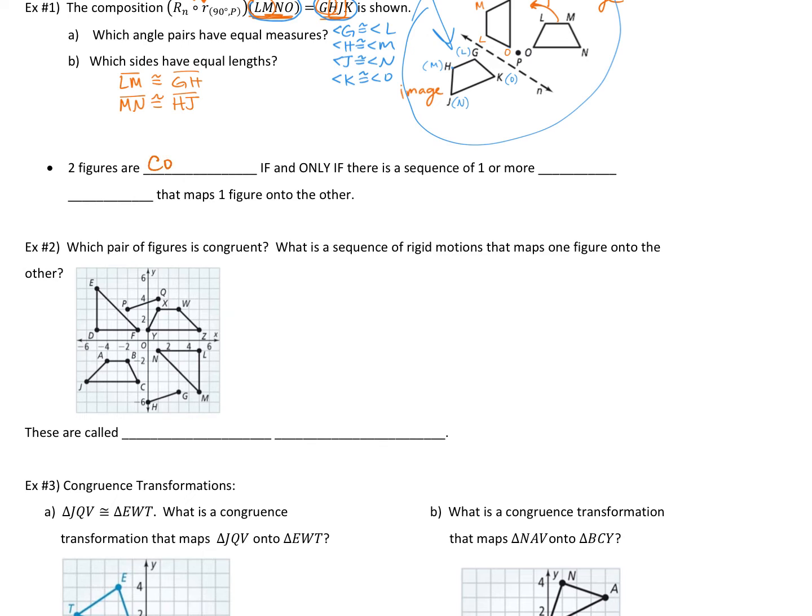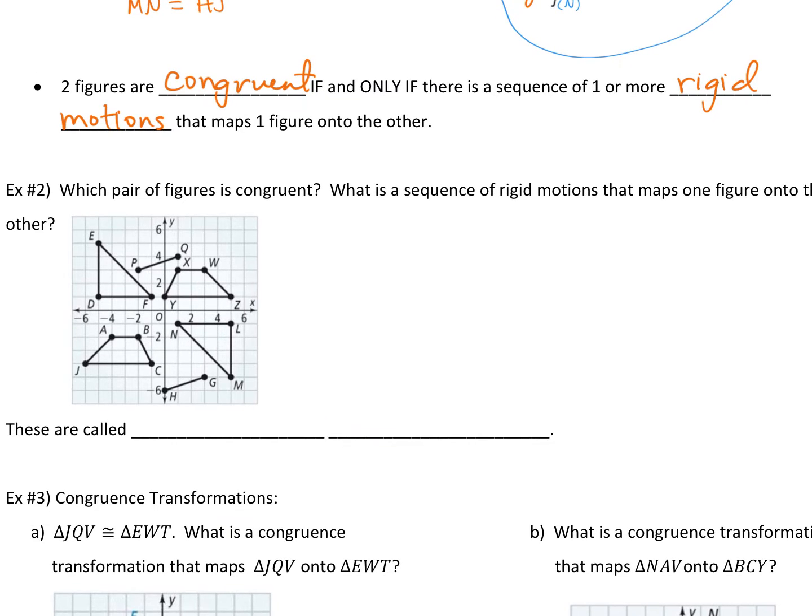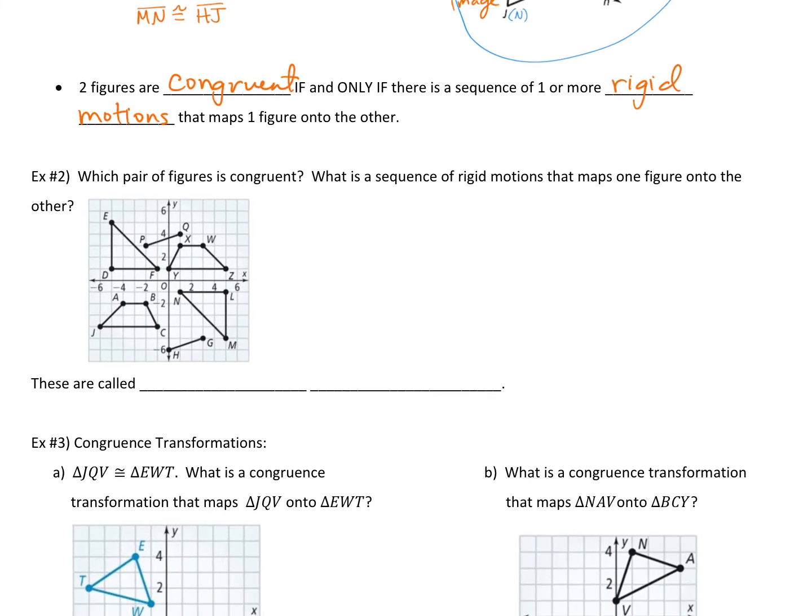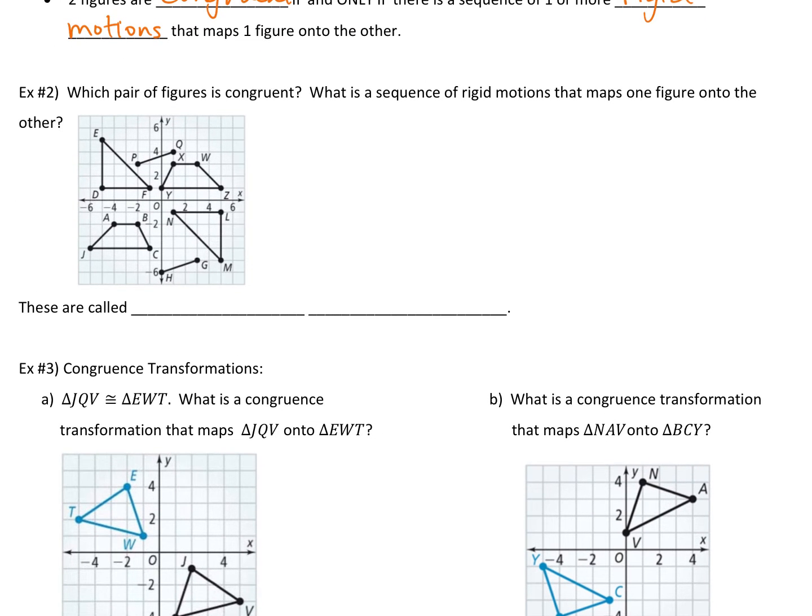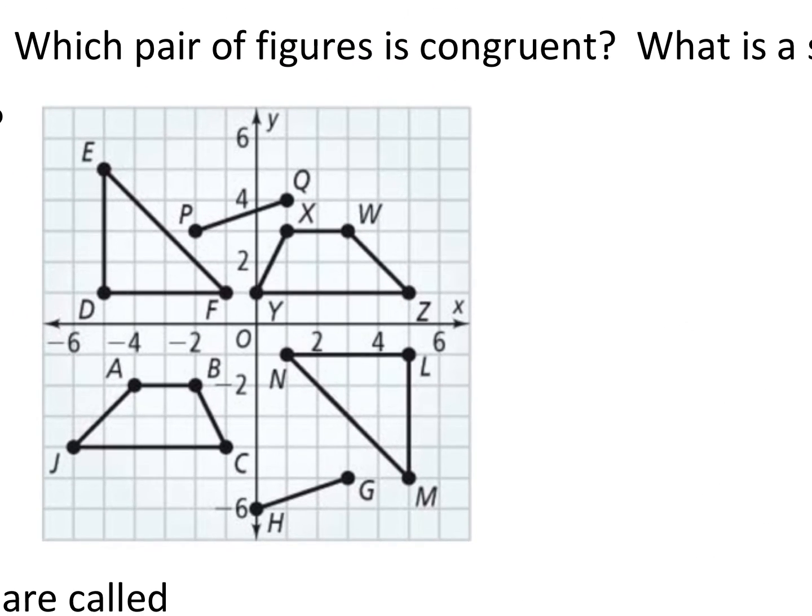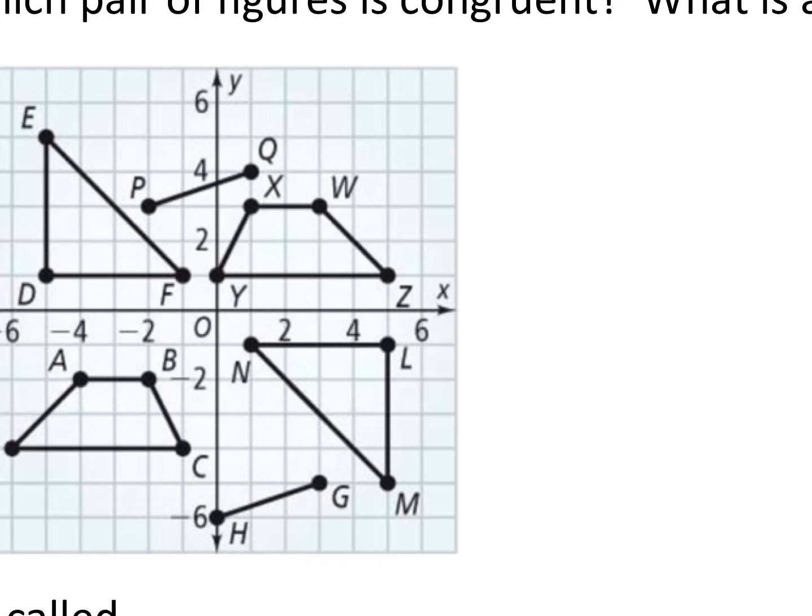Then we're gonna say two figures are congruent if and only if there's a sequence of one or more rigid motions. If we keep everything the same size and the same shape and then we map one figure onto another and that figure onto another one, you can do it as many times as you want. As long as we keep them rigid motions, your figures will be congruent. So we're gonna look at this picture. It says which pair of figures is congruent and then write a sequence of rigid motions that maps one figure onto the other.